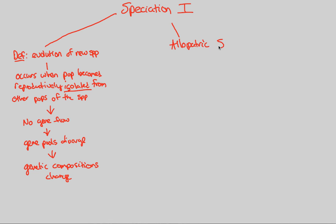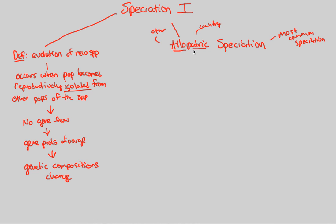Allopatric speciation is the first type, and it's actually the most common type of speciation we'll see in nature. Let's break down this word: 'allo' means other, and 'patric' usually refers to homeland — or you can consider it 'other country.' So, what is allopatric speciation?